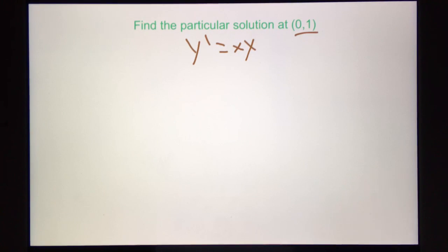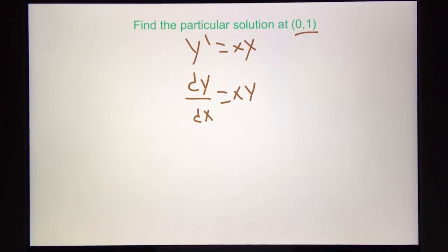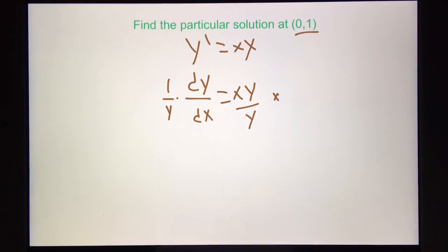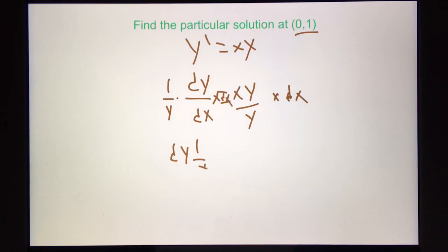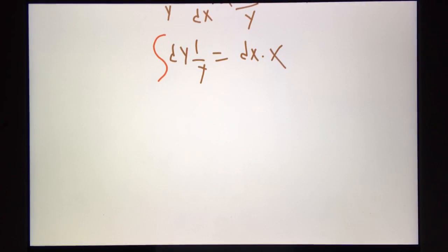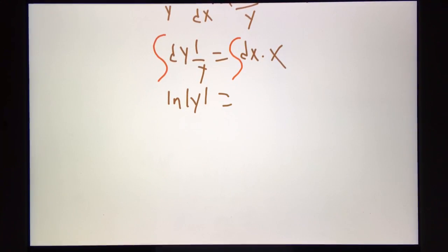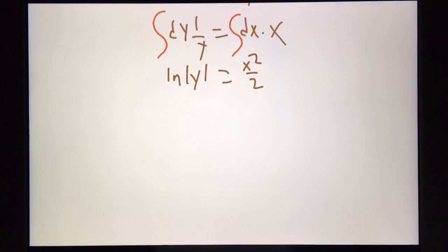How we do that is we integrate — we find the antiderivative of this equation to find the function. So we can turn y prime into dy over dx. Then we divide by y, multiplying by 1 over y, and also multiply by dx. We get dy times 1 over y equals dx times x. And now we integrate using the integral sign. The antiderivative of 1 over y is the natural log of the absolute value of y. We get x squared over 2, which is the antiderivative of x. Plus c — do not forget the plus c.